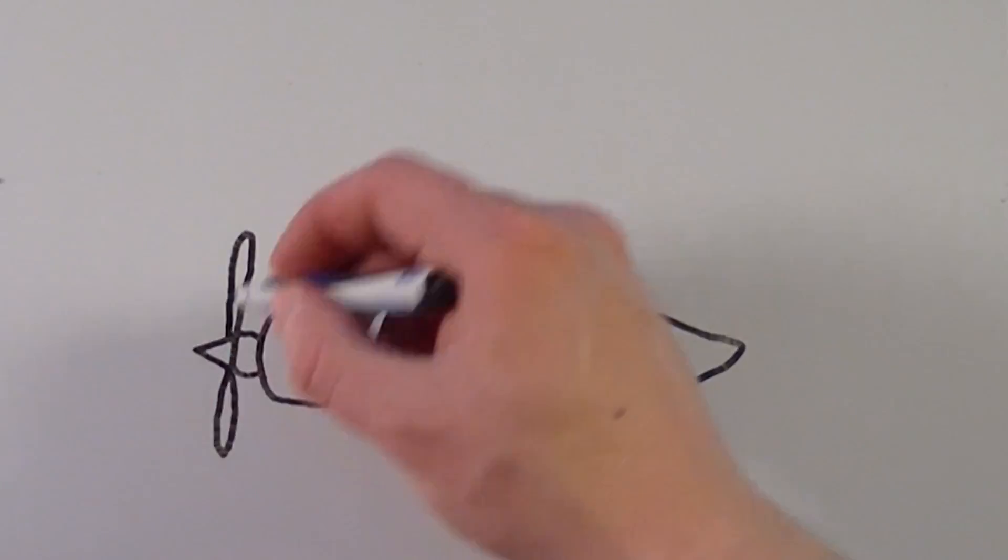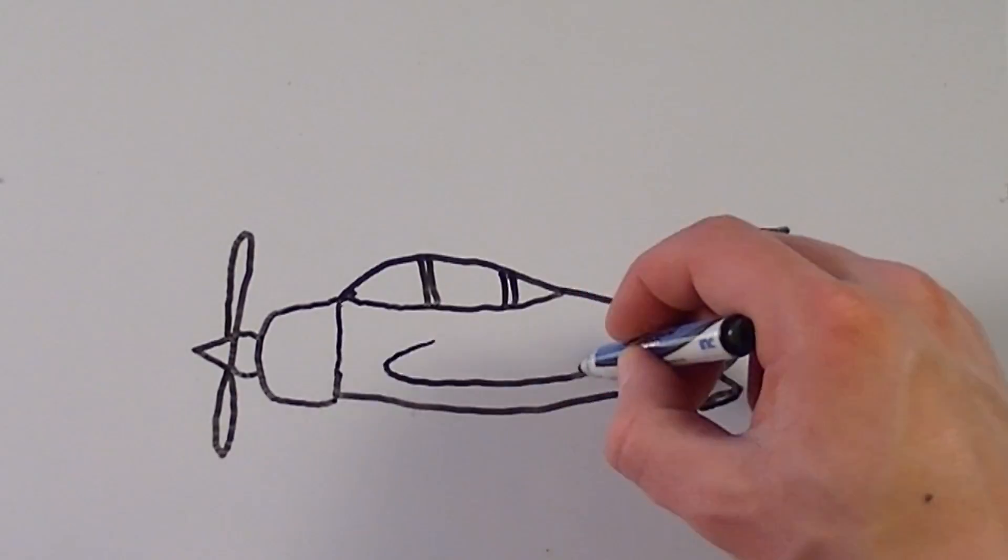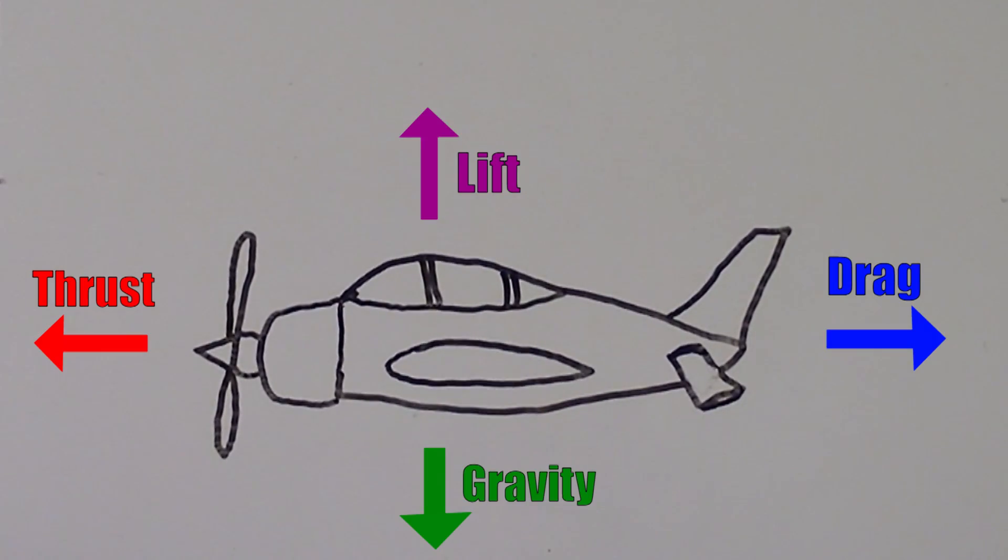Okay, so as you may already know, there are four major forces that act on an airplane in flight: thrust, lift, drag, and gravity.